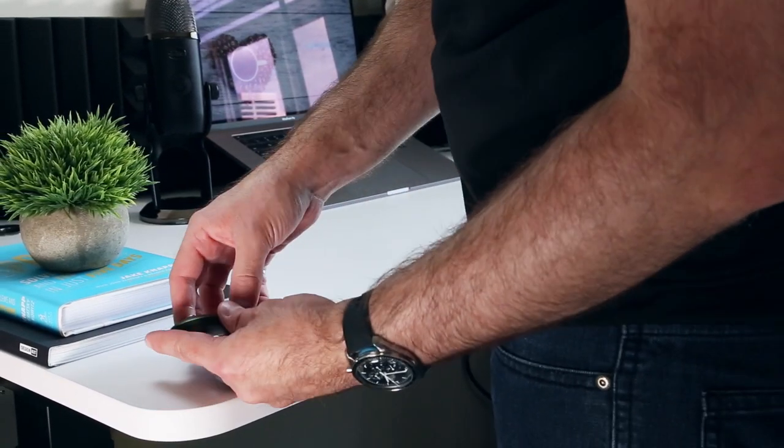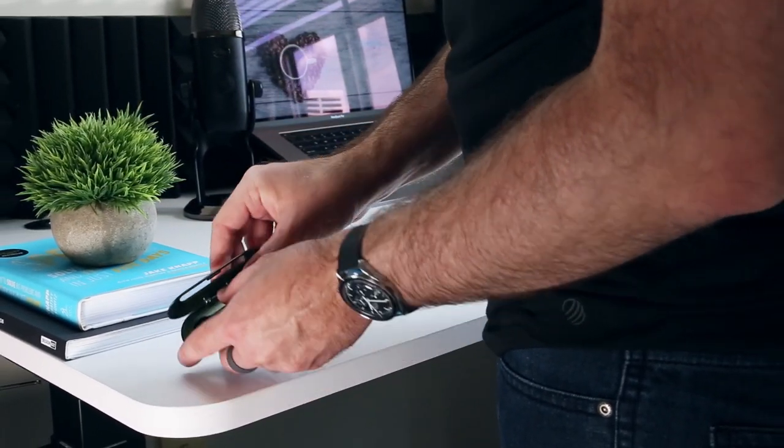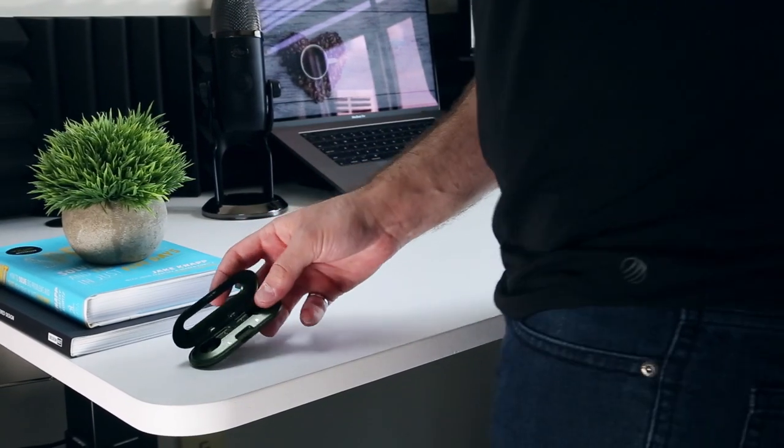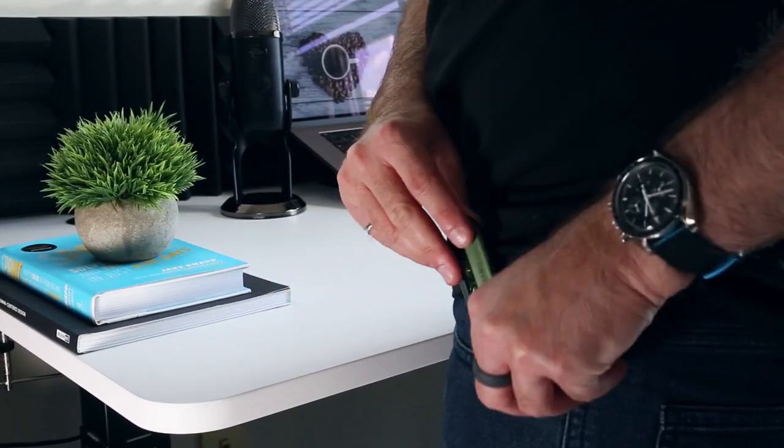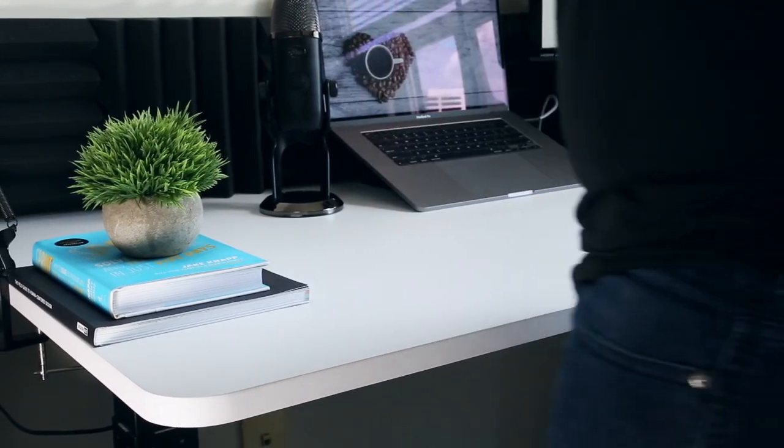I often find myself leaving my earbuds, or at least their case, at home rather than jamming them in my pockets if I'm not taking a backpack when I leave the house. But with the Card 20 earbuds I can easily slide the case into my pocket without a crazy amount of bulge.